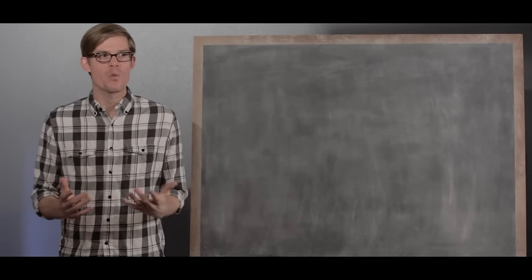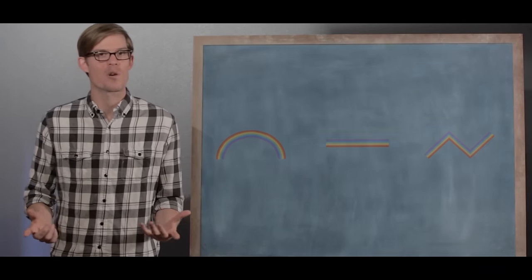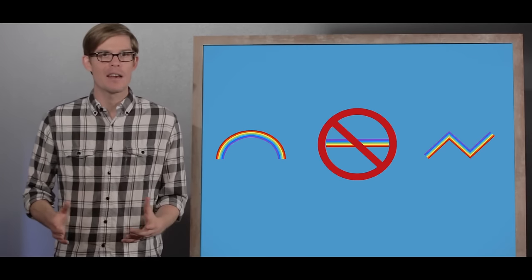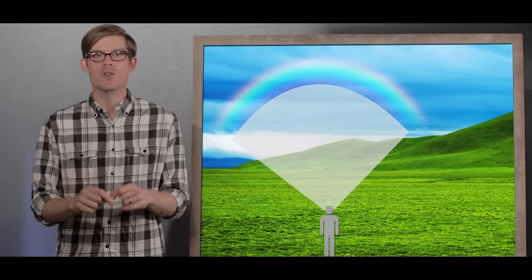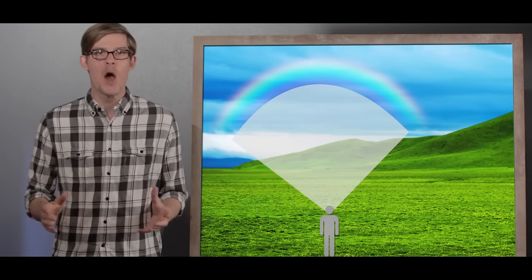And what about the shape? I mean, we call it a rain bow for a reason. It's not a rain line, or a rain zigzag. See, you and your eyes are at the apex of a huge half cone, and at the other end is the water that makes the rainbow. This gives a rainbow that curved shape we all know and love.